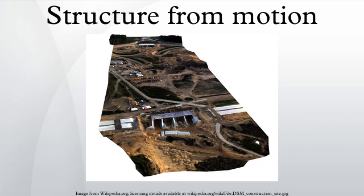Another common feature detector is SURF. In SURF, the difference of Gaussians is replaced with a Hessian matrix-based blob detector. Also, instead of evaluating the gradient histograms, SURF computes the sums of gradient components and the sums of their absolute values. The features detected from all the images will then be matched.